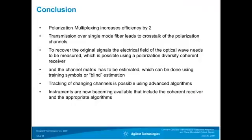To conclude: polarization multiplexing increases spectral efficiency by a factor of two. Transmission on single-mode fiber leads to crosstalk between polarization channels, so we need to recover the original signals to demodulate at the receiver. For this we need a polarization diversity coherent receiver and must estimate the channel matrix, which can be done using training symbols or blind estimation. Tracking of the time-varying channel is possible using decision-based algorithms, and instruments including the coherent receiver and appropriate channel matrix estimation algorithms are now becoming available.